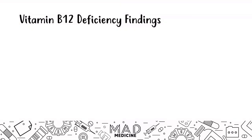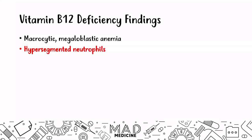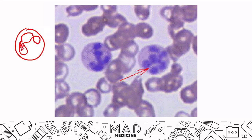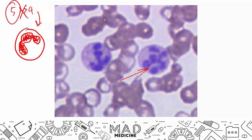When it comes to deficiency findings, you're going to see macrocytic megaloblastic anemia with hypersegmented neutrophils — very high yield. Hypersegmented neutrophils are shown in these slides. Neutrophils usually have about three lobes. In vitamin B12 or folate deficiency, these neutrophils cannot divide further because DNA synthesis is not occurring. So instead of progressing from five lobes down to three, they get stuck at five because they cannot move forward, resulting in these hypersegmented neutrophils.